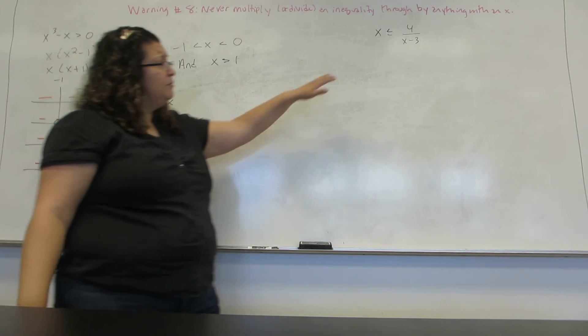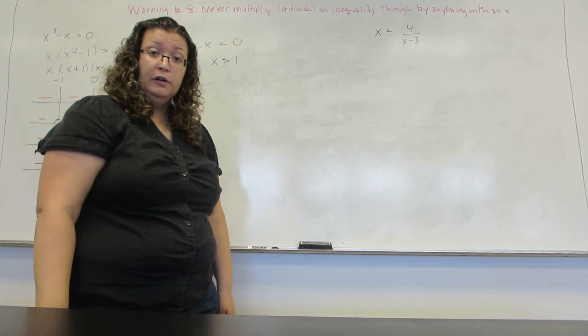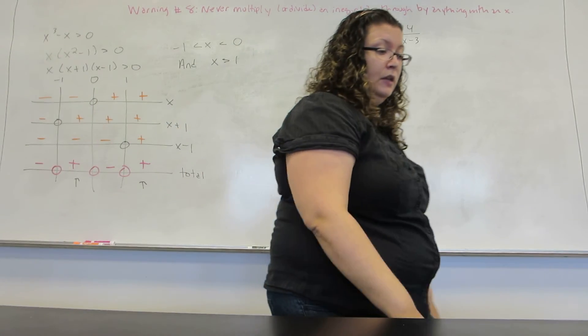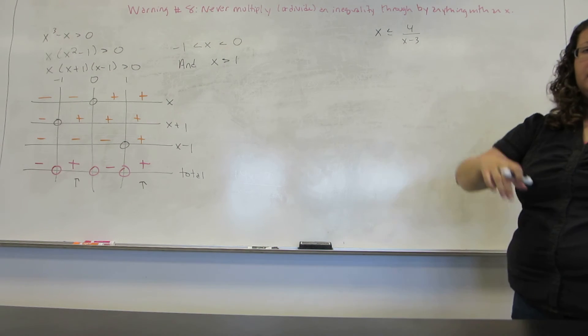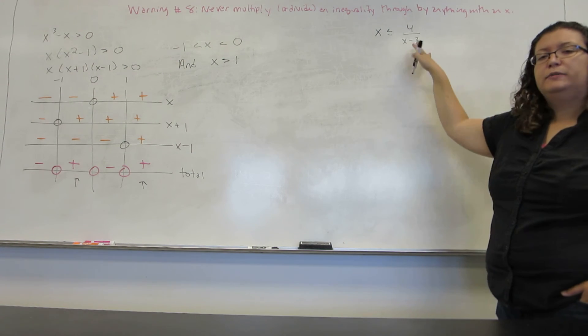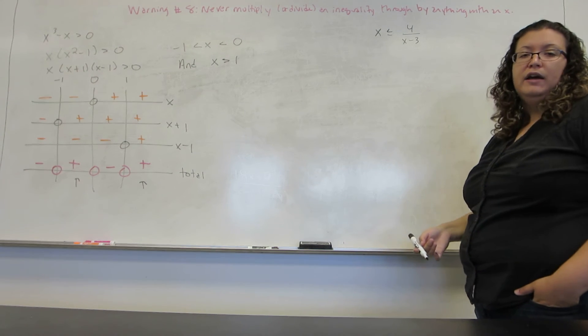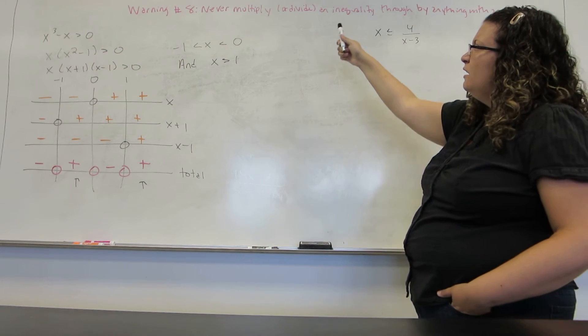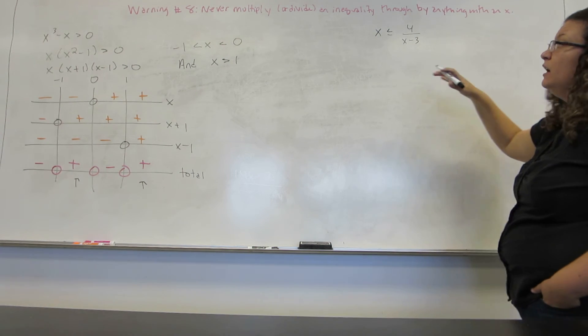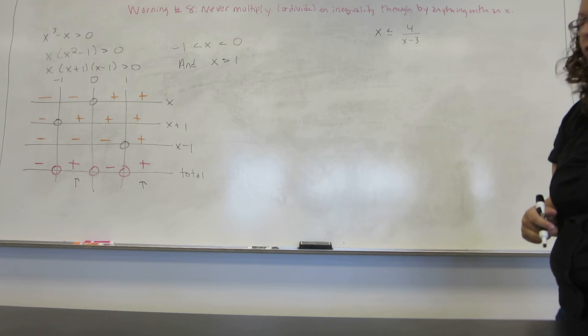Now I come to this inequality. It looks a little bit different because there's no zero on one side and I have to fix that. Now you have to be very careful here. If this were an equal sign I would simply multiply both sides by X minus 3 and get rid of the fractions. But I can't do that here. This is where my eighth warning comes in that I can never multiply or divide an inequality on both sides by anything that has an X in it. And here's why.